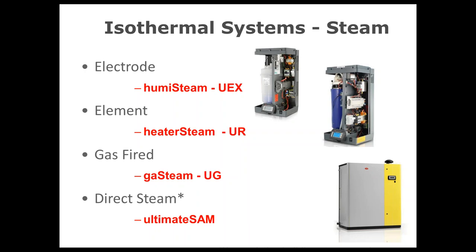The resistive element humidifier uses a permanent tank with a resistive element immersed inside. Upon the call for humidity, the element heats up, similar to an electric water heater. Since minerals in the water are no longer needed for operation, reverse osmosis or DI water can be used. Softened water is still not recommended as it causes foaming inside the tank.